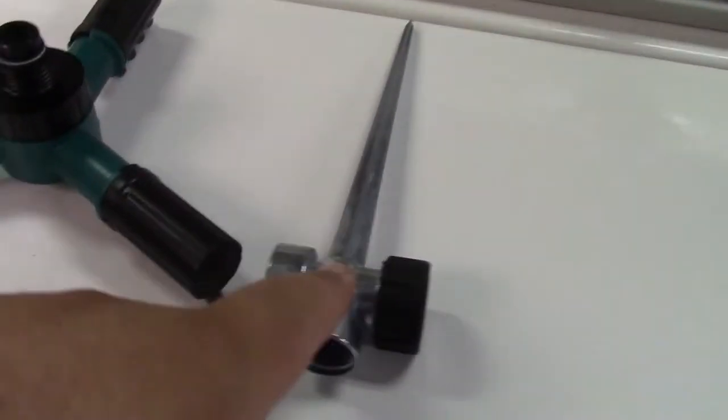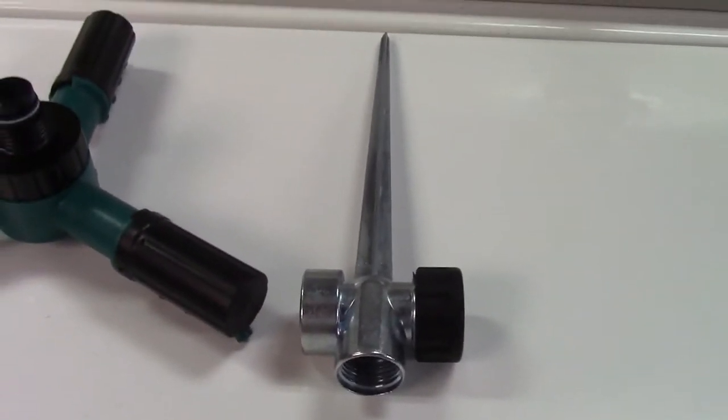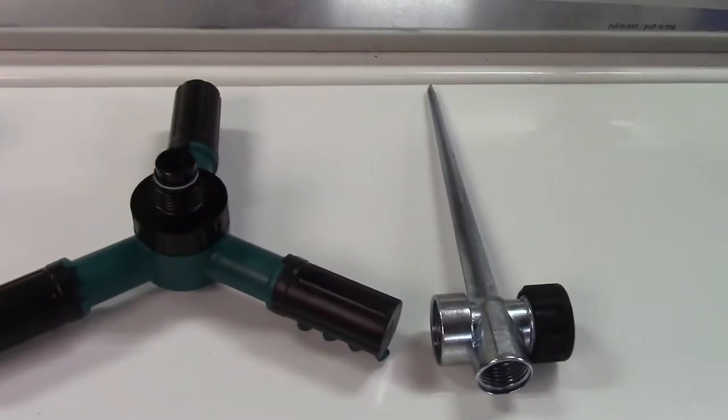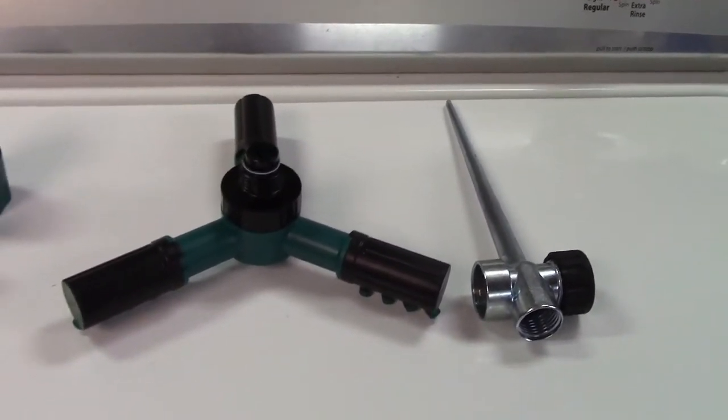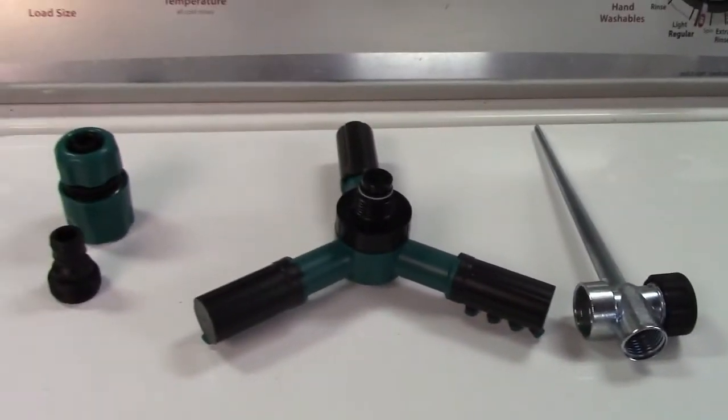What's nice about the metal stake is that it is aluminum so it will not rust when it's placed in the ground. It does require a very small amount of assembly which is very easy so I'll show you that right now.